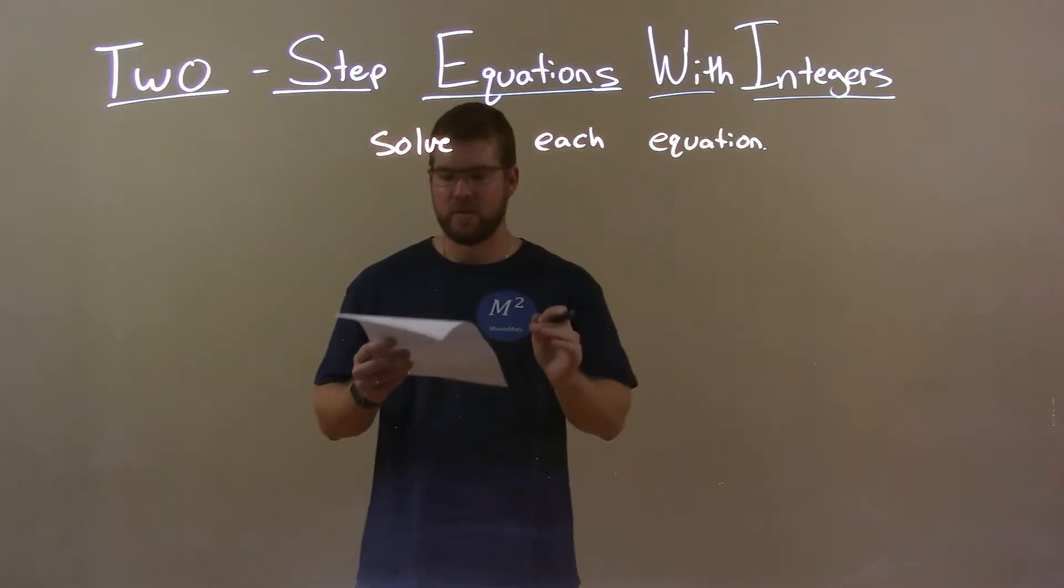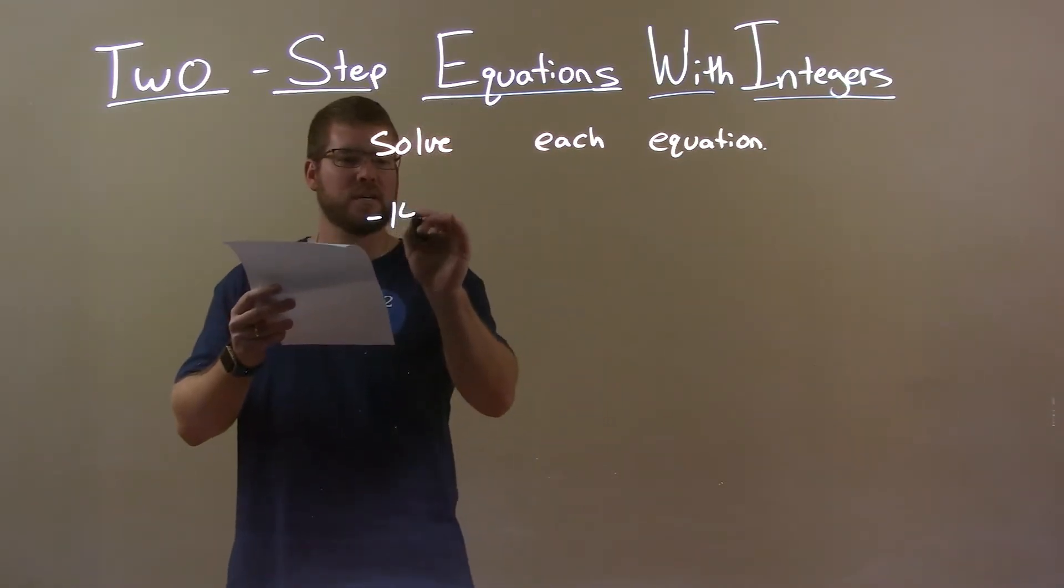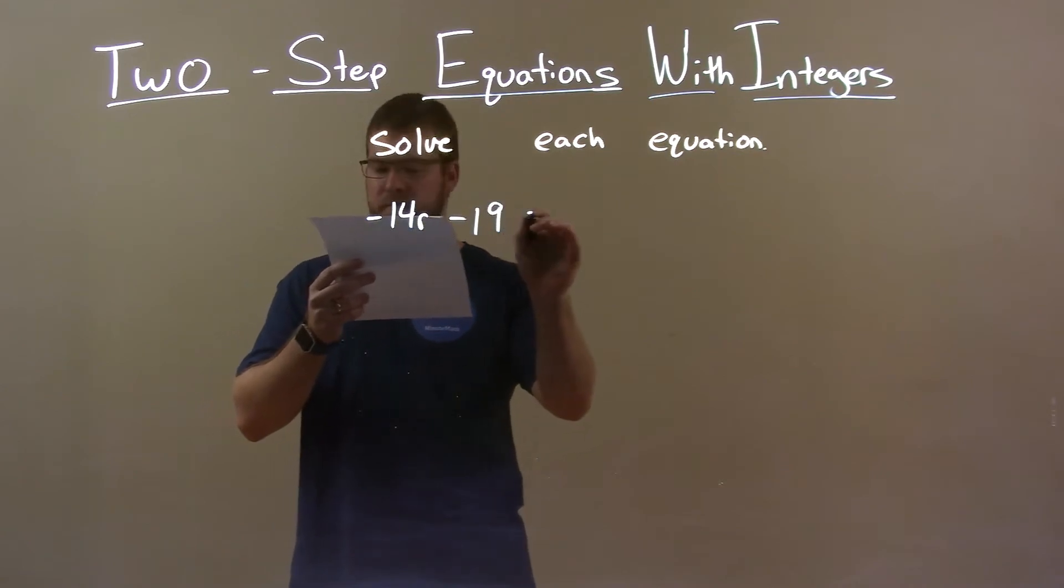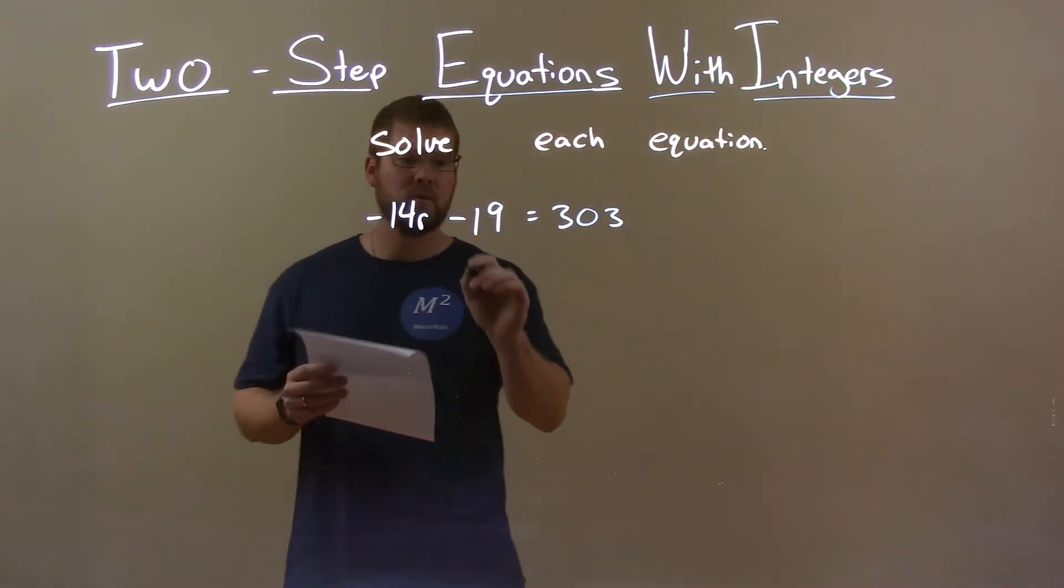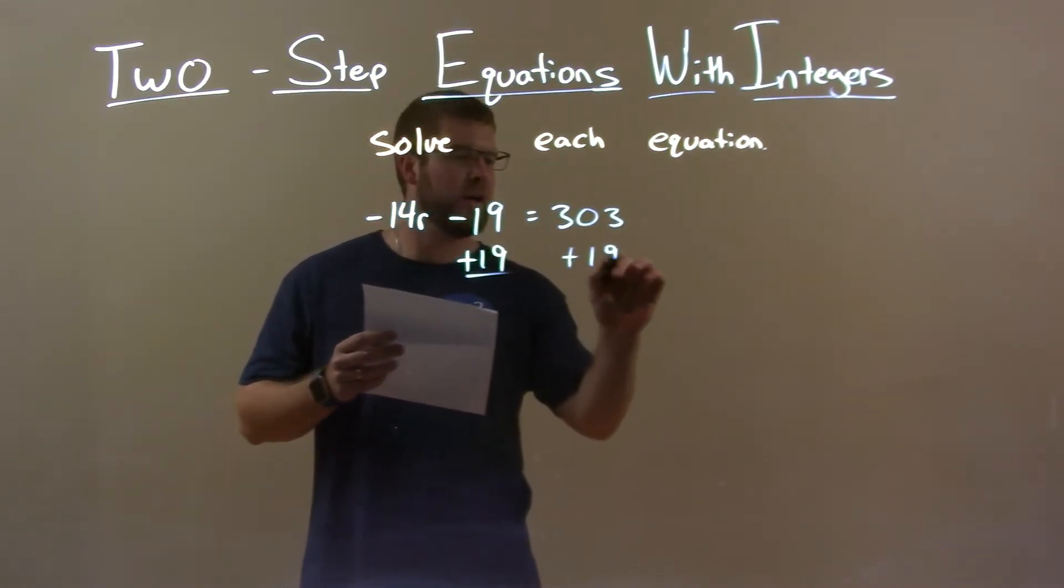If I was given this equation, negative 14r minus 19 equals 303, first thing I want to do is add 19 to both sides.